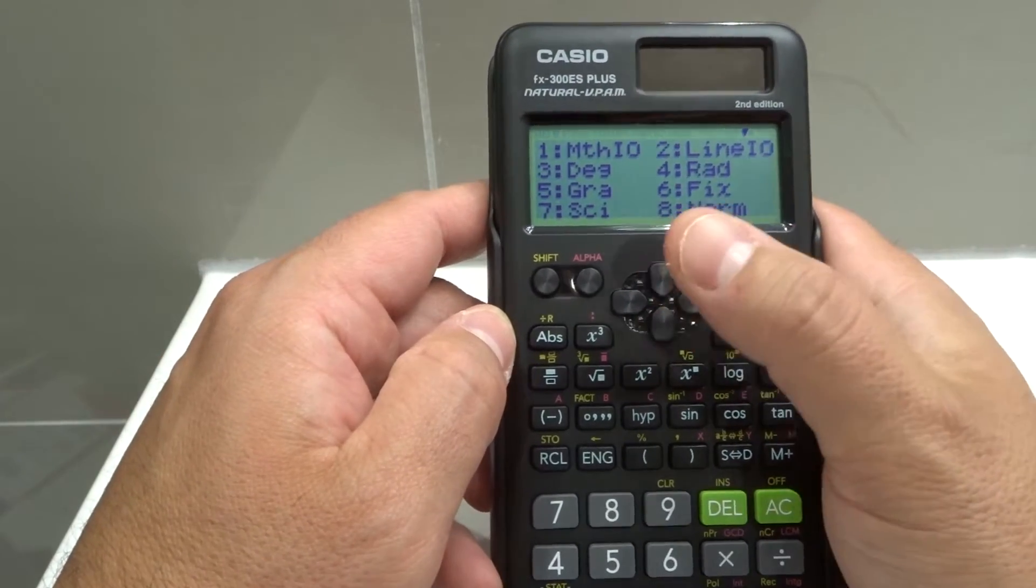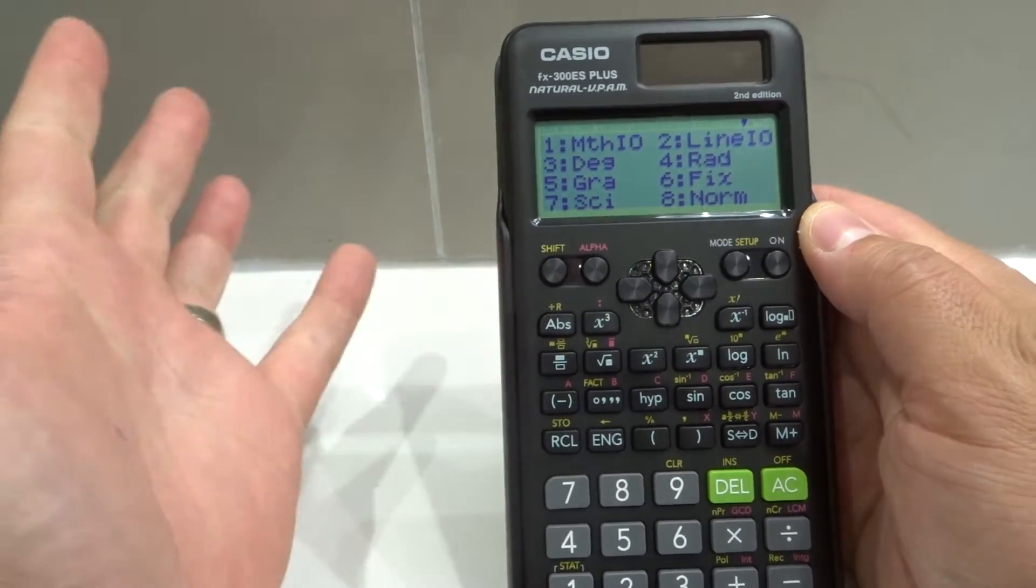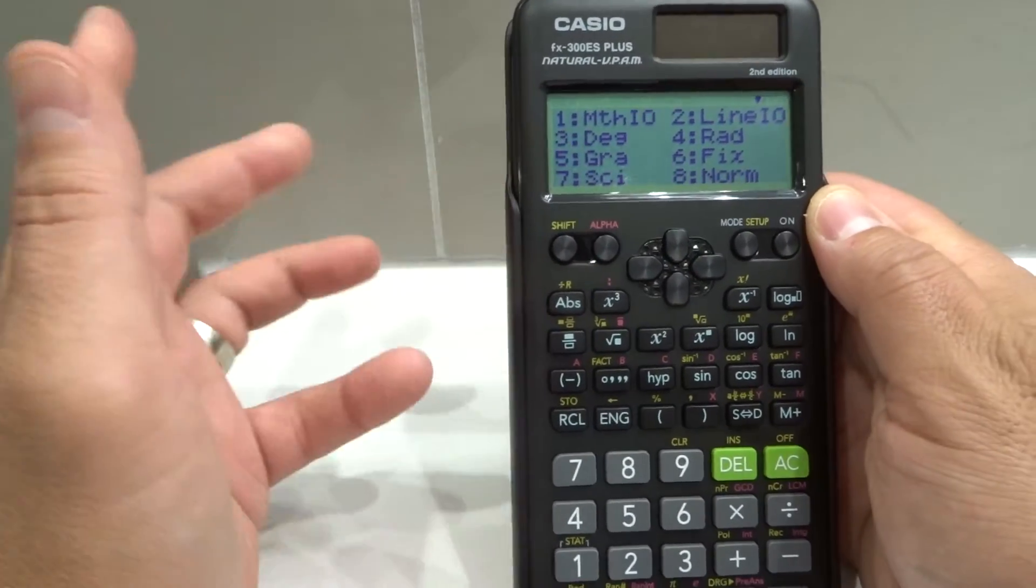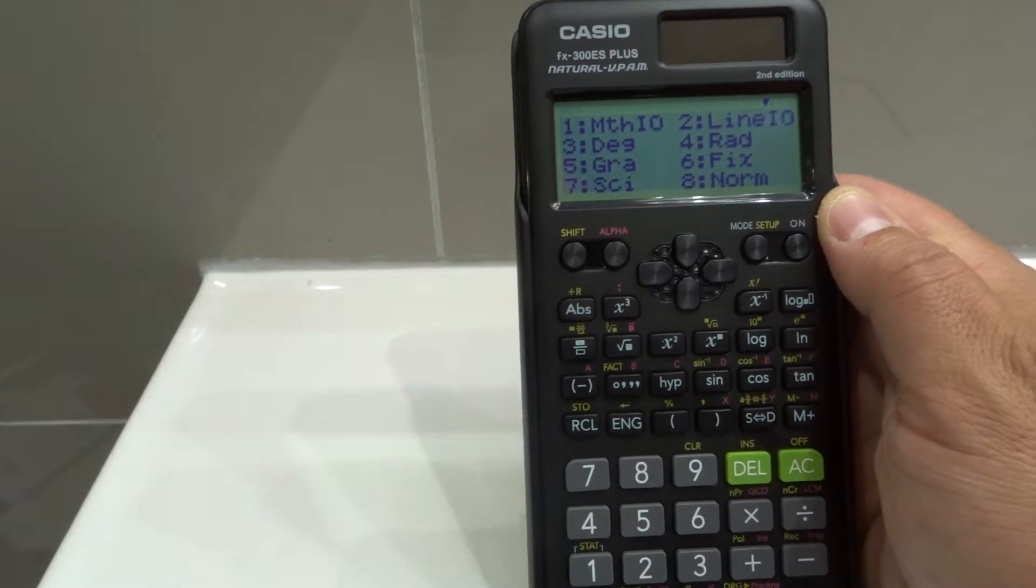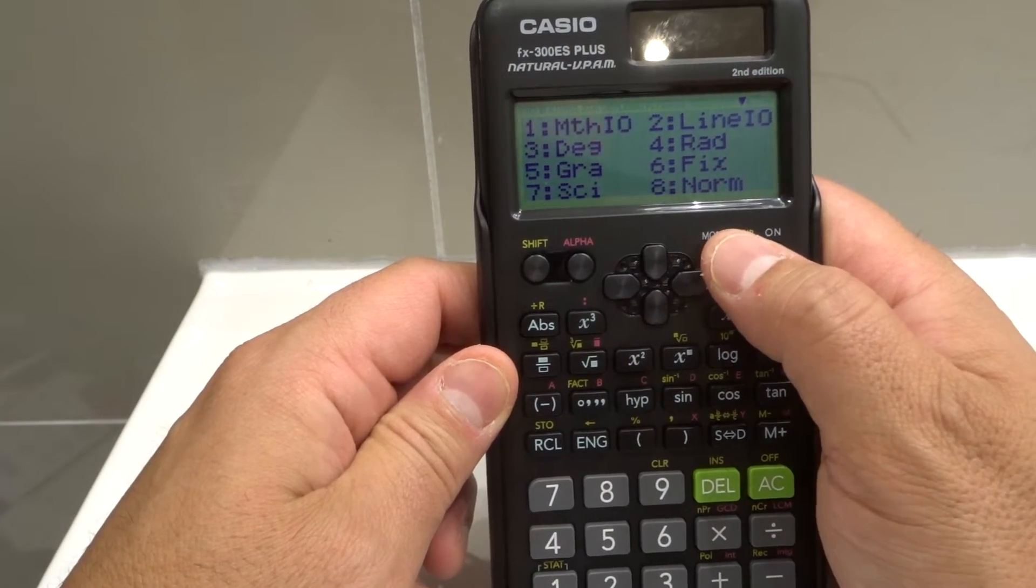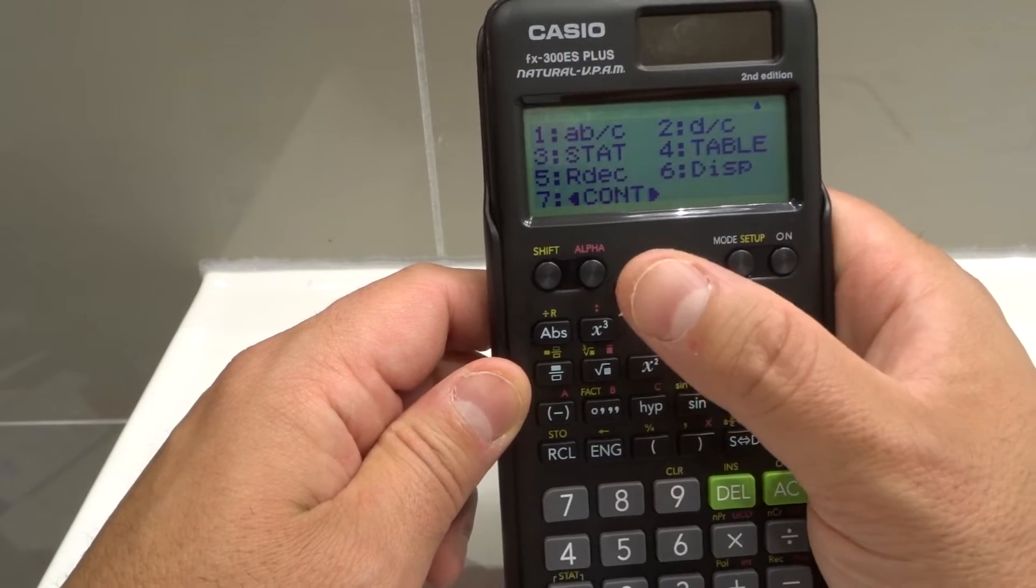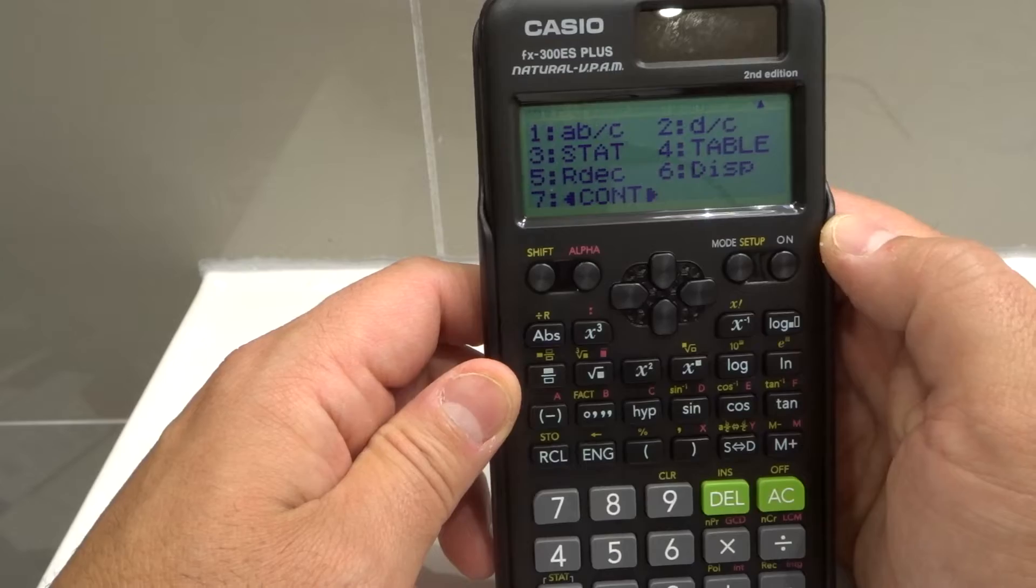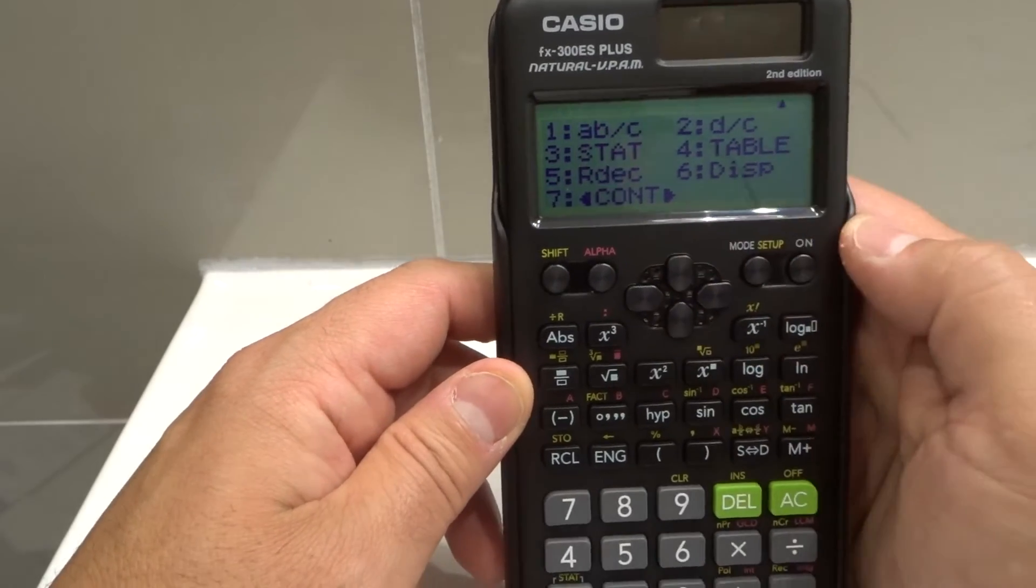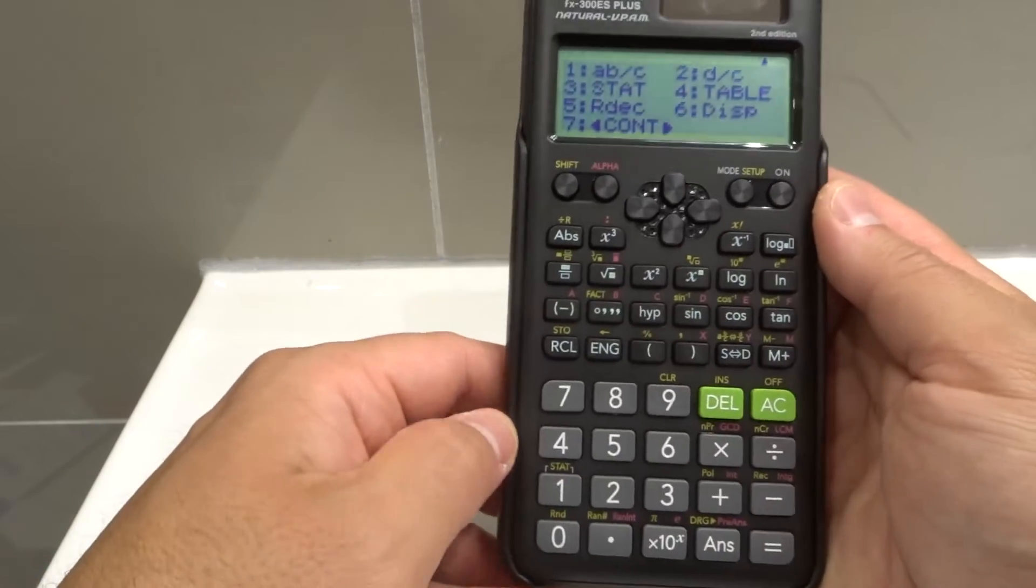Now you're going to look here and you might see something that says con or cont for contrast or bright for brightness. If you don't see it, you want to go to the next screen. You can push mode again on some calculators but this one has arrows so I'm going to push the down arrow and as you can see number seven says cont and it shows a right arrow and a left arrow. So it's contrast increasing or decreasing. I'm going to push number seven.